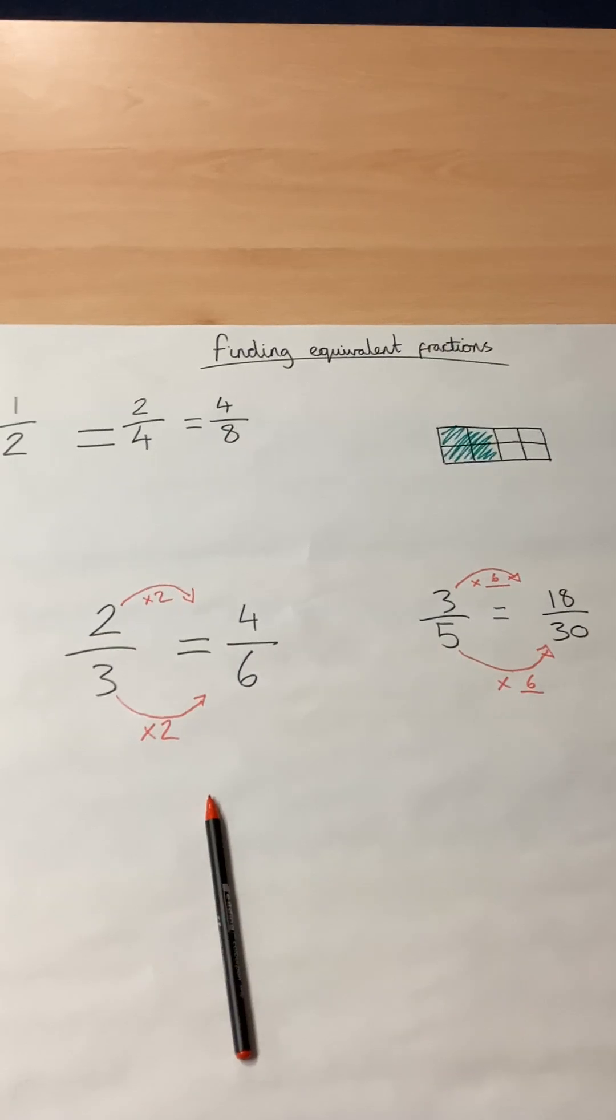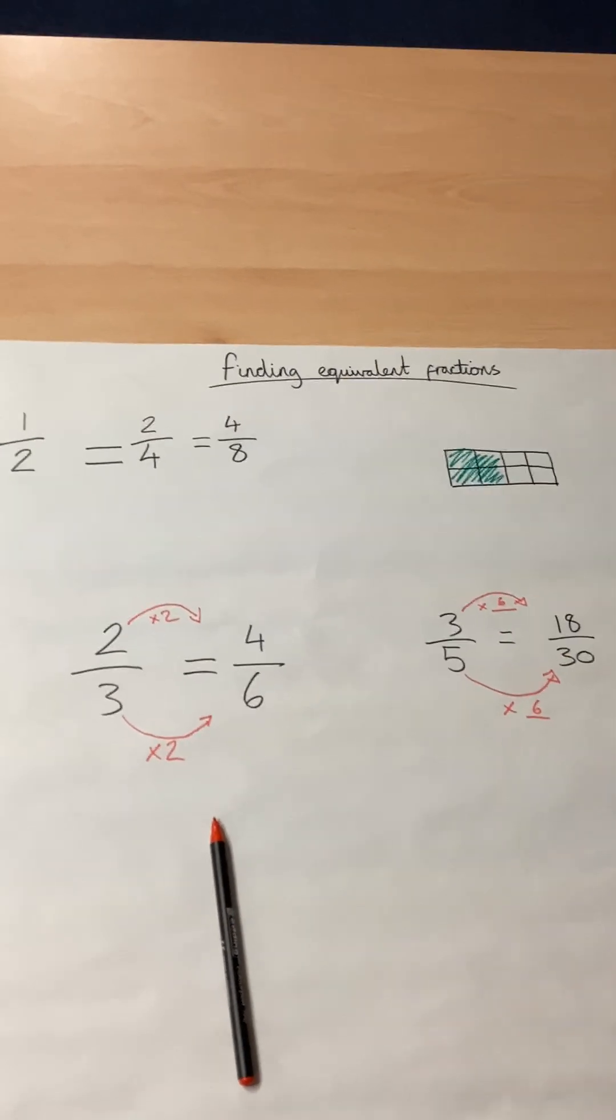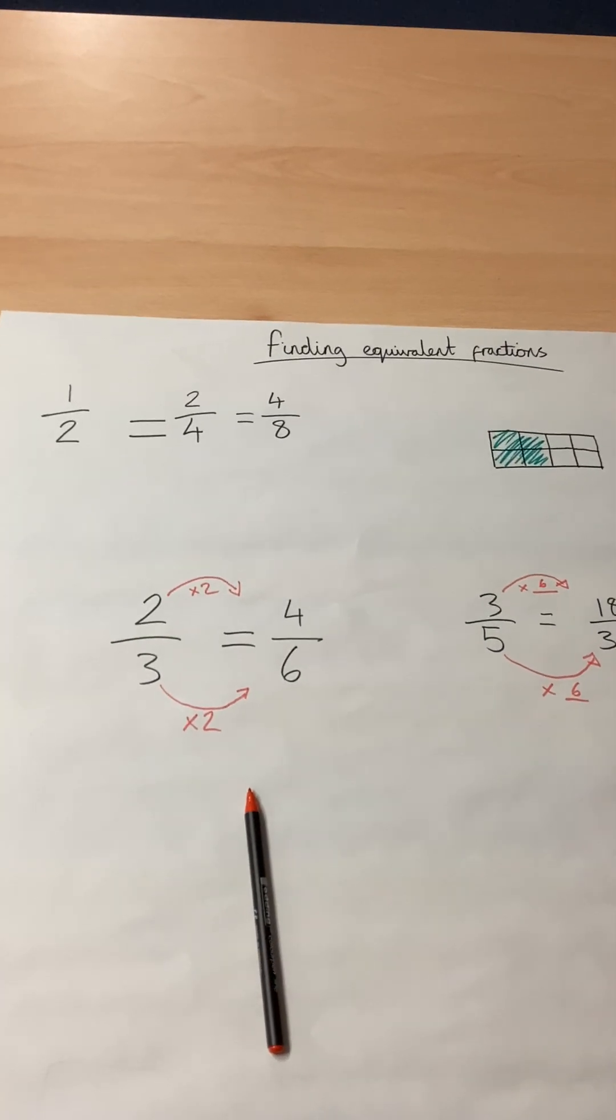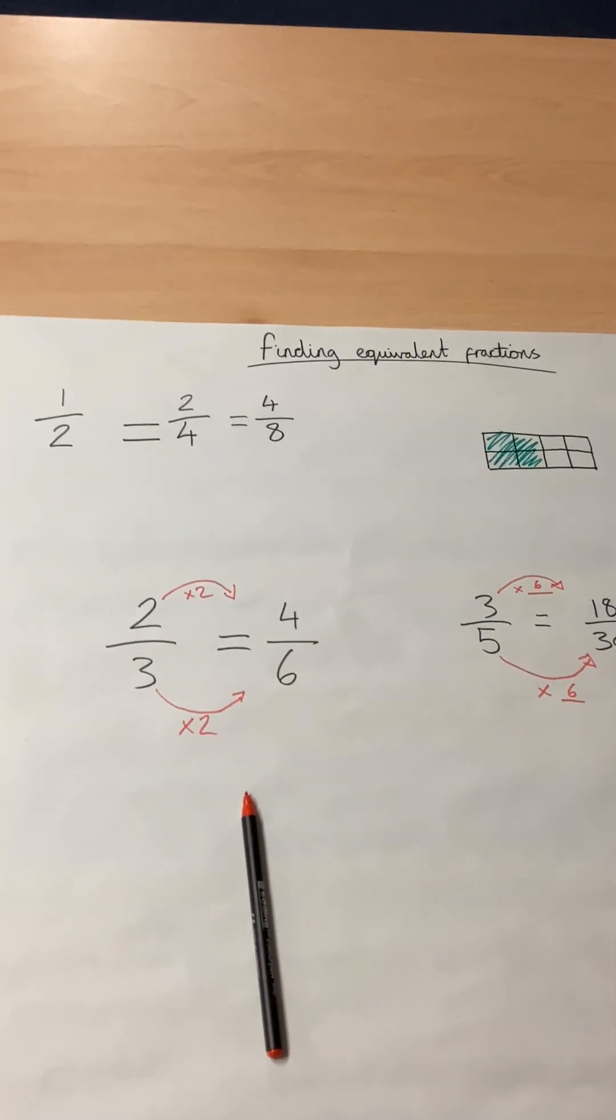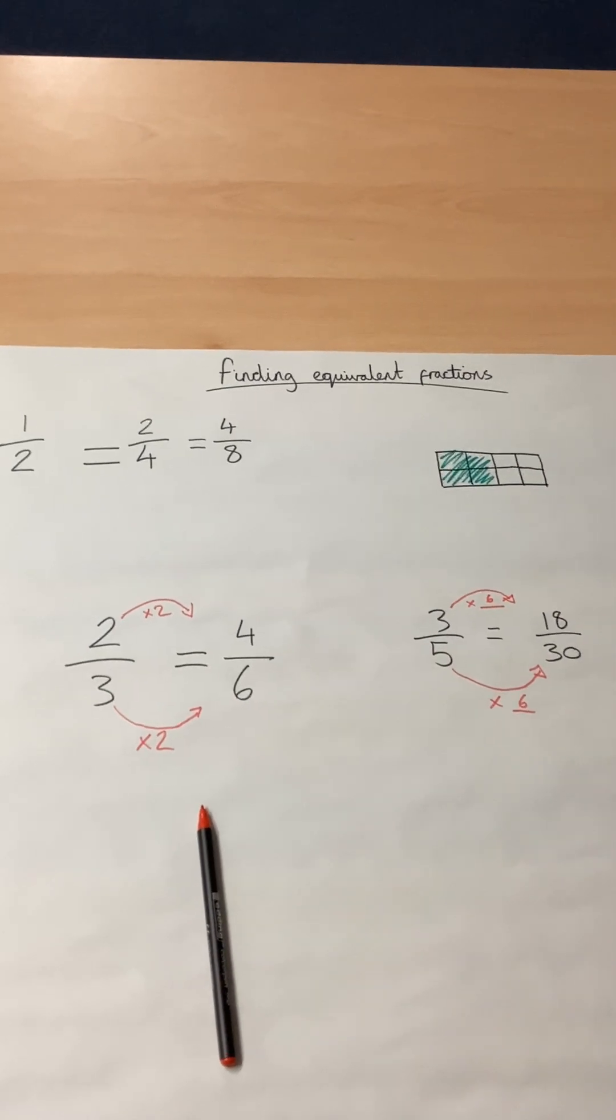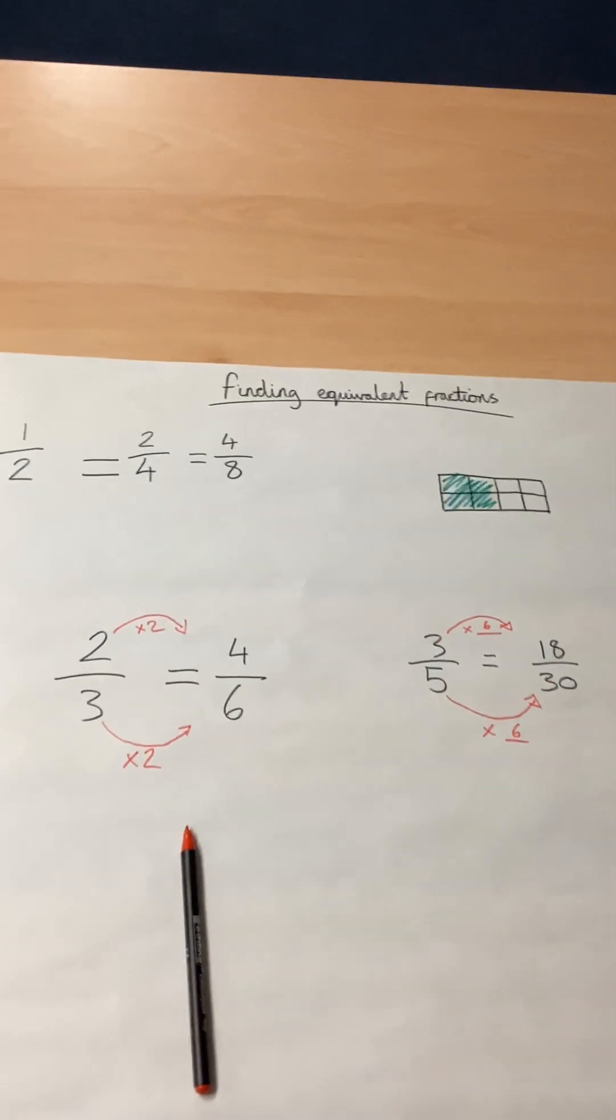To find an equivalent fraction to make it easier for doing more challenging work, whatever you need to multiply the bottom by, multiply the top by the same. The numerator and denominator get multiplied by the same amount to make the equivalent fraction.